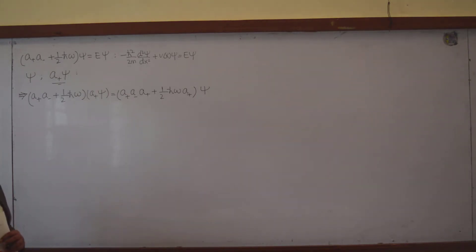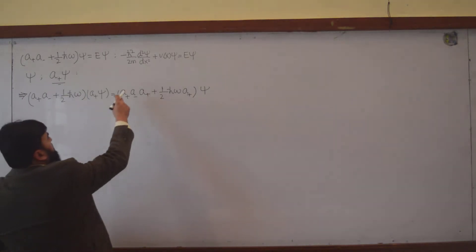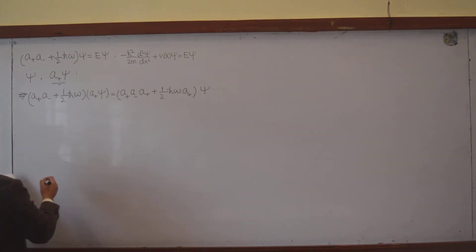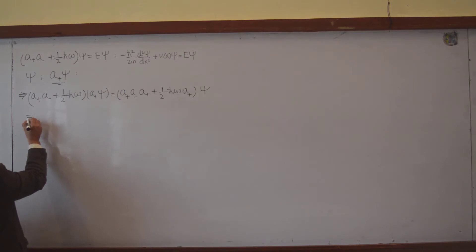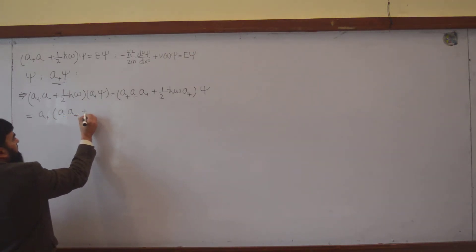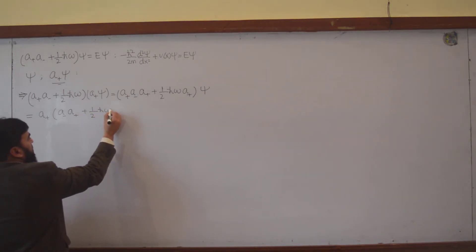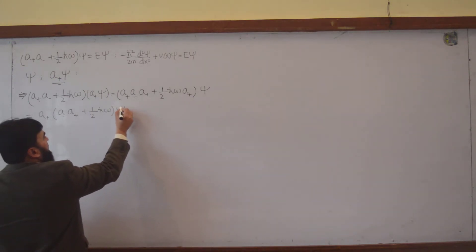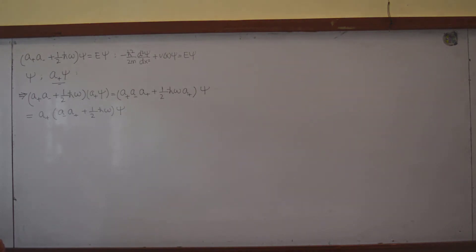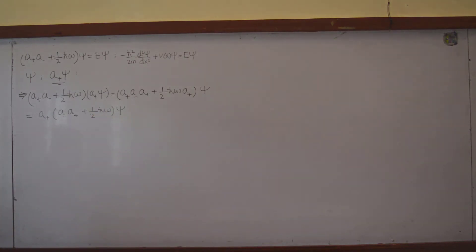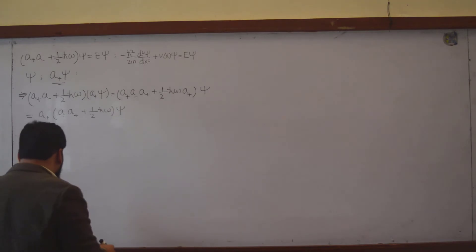These are operators — I cannot freely rearrange them — but I can take a₊ as common on the left. So it becomes a₊ · (a₋a₊ + ½ℏω) · ψ, because ½ℏω is just a constant and a₊ is factored out.